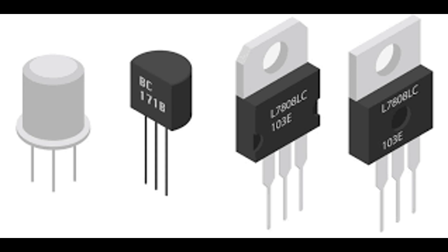Structure and Basic Operation. A thyristor consists of four alternating layers of P-type and N-type semiconductor material, forming a PNPN structure. It has three terminals: Anode (A), connected to the outer P layer; Cathode (K), connected to the outer N layer; and Gate (G), connected to the inner P layer.